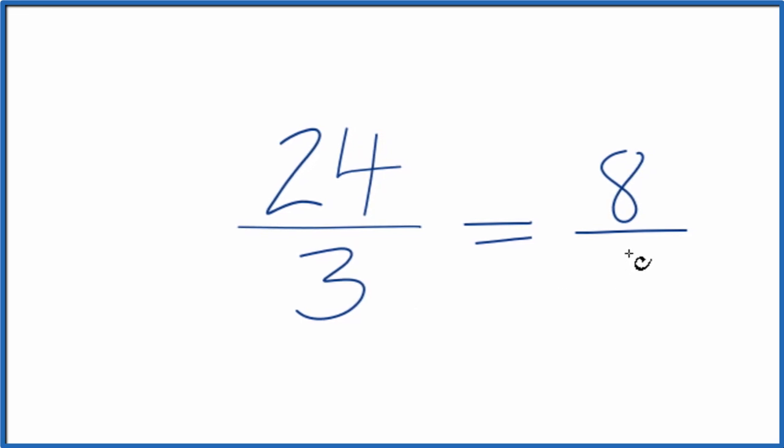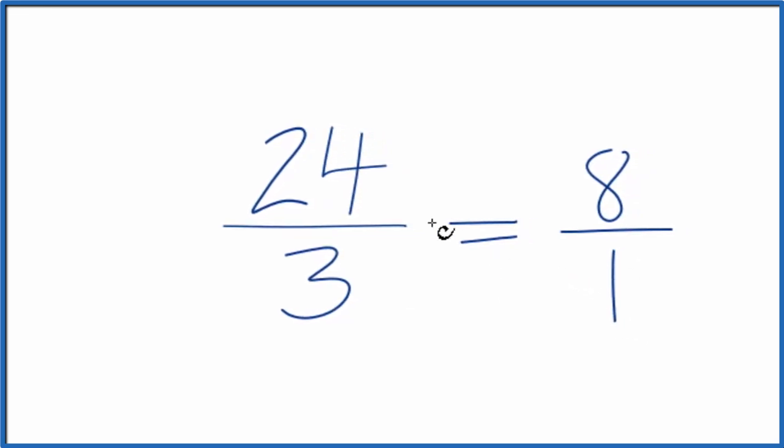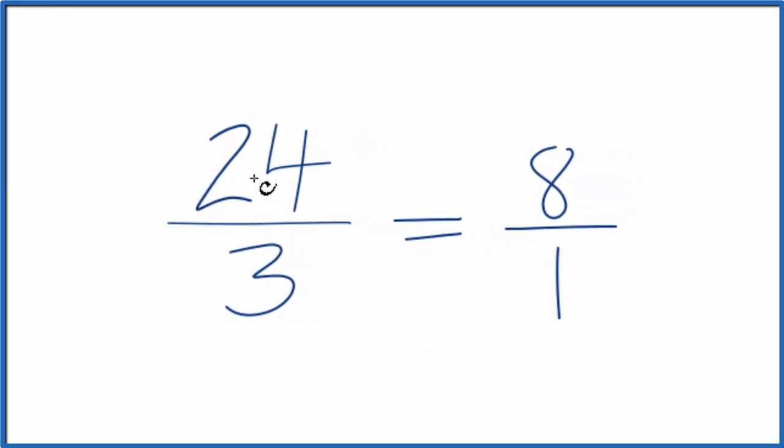And then 3 divided by 3, that's just 1. So the greatest common factor would be 3. Divide 24 by 3, you get 8. Divide 3 by 3, you get 1.